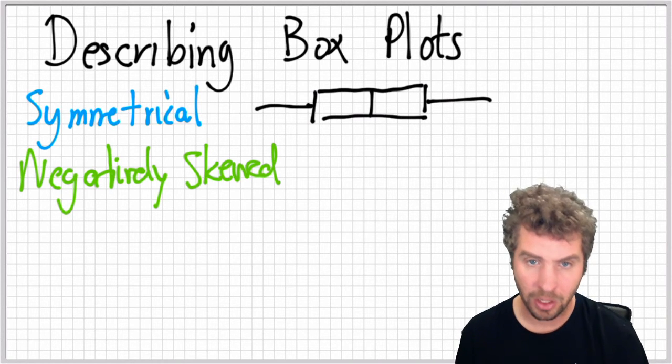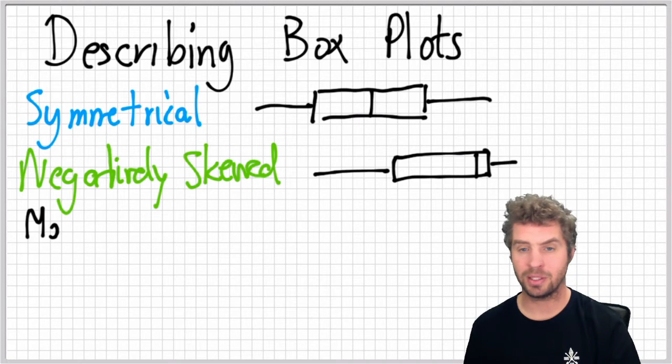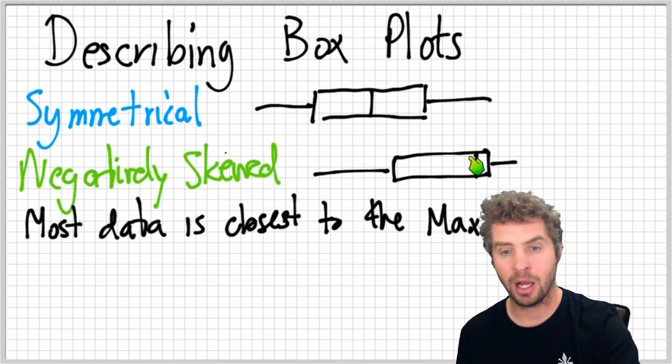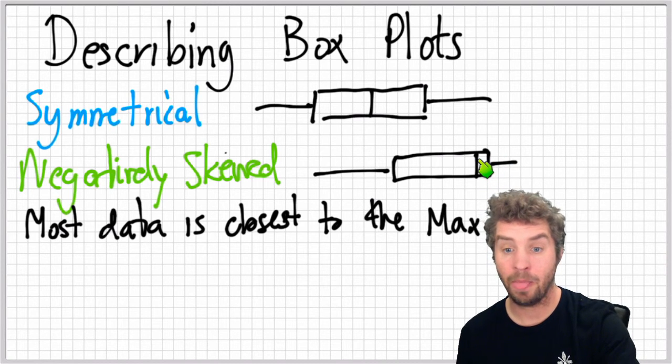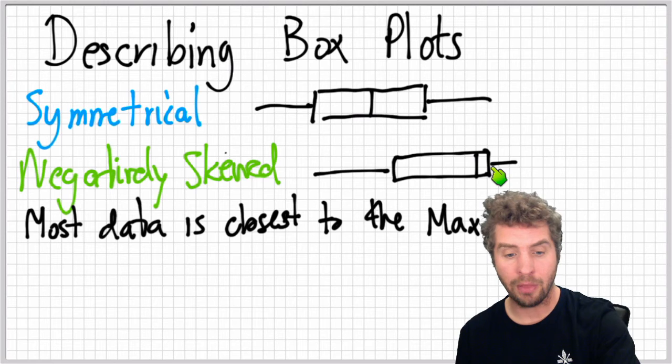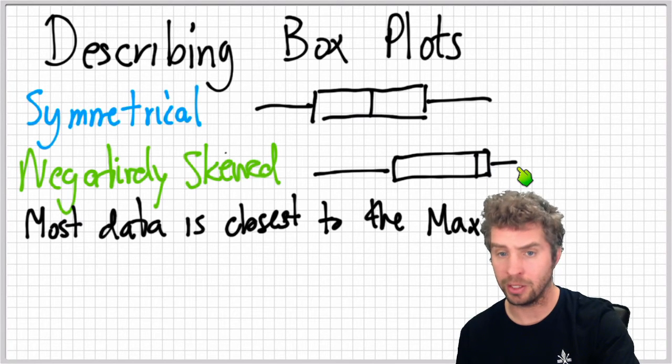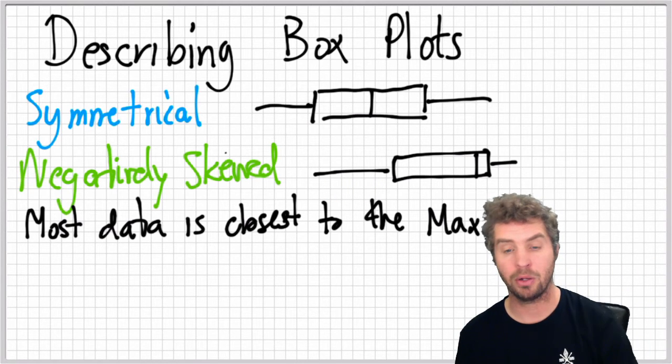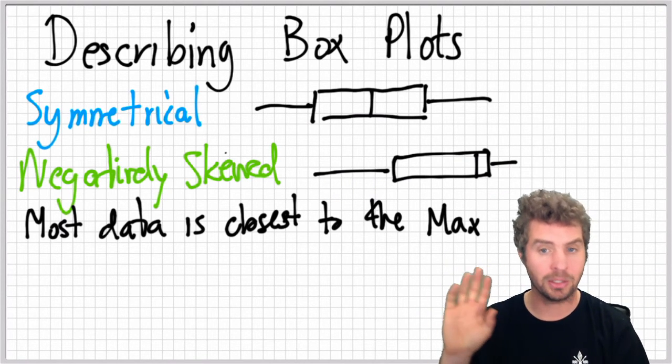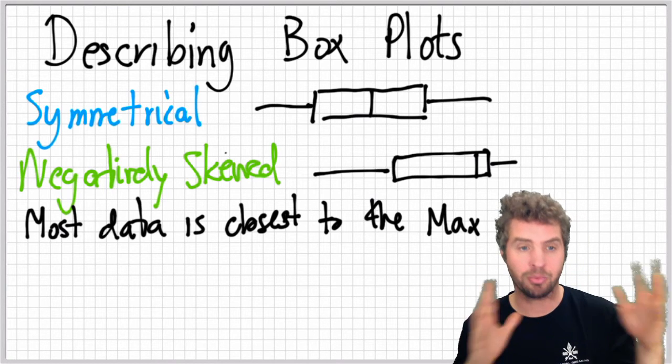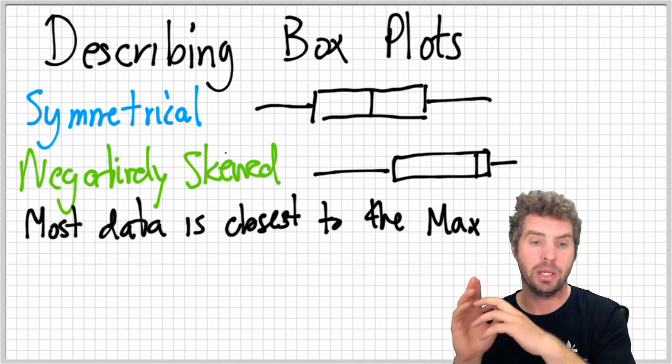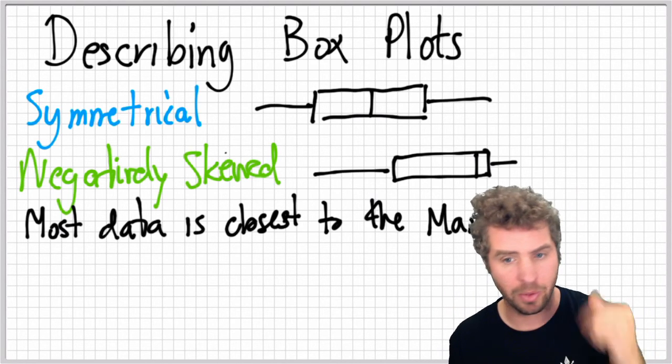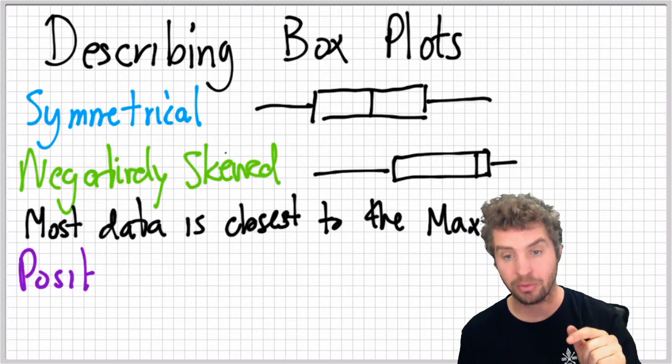Negatively skewed is when the data is all particularly to one side and that is mostly to the closer to the maximum. So if the data, we can see that the median is close to the third quartile and the third quartile is close to the maximum, whereas the first quartile and the minimum are more spread out. So because the spread is closer to, it's more spread out on the lower side, we call that negatively skewed. That's just the way we do it.